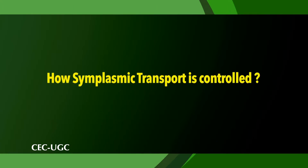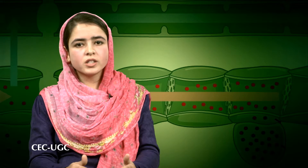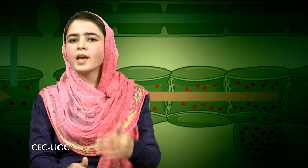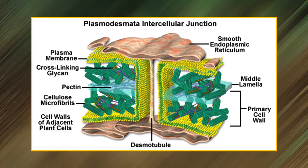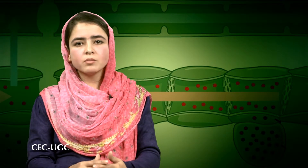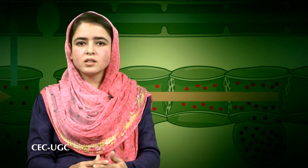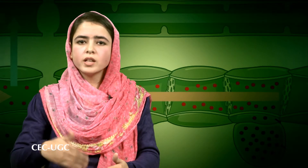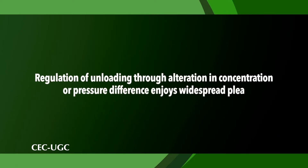Long-term control of symplasmic phloem unloading could be mediated through developmental shifts in plasmodesmatal numbers and in the length of their ultrastructure that rate-limit transport. Short-term regulation of symplasmic phloem unloading may be exercised through rapid changes (seconds to minutes) in plasmodesmatal radius and hence plasmodesmatal conductivities or turgor differences. Regulation of unloading through alteration in the concentration or pressure difference provides a mechanism where metabolic demand of the recipient sink cells directly determines these differences and hence phloem unloading rates.